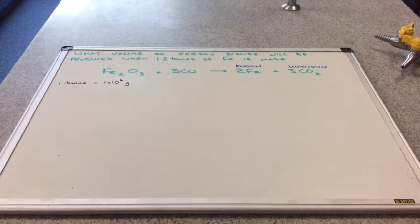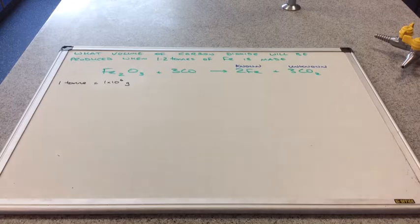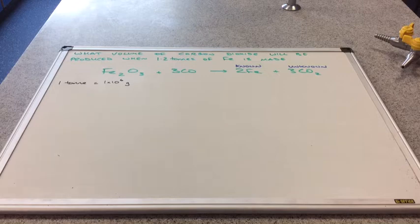So we've identified the known and the unknown. So iron's the known substance. We know that 1.2 tonnes have been made. The unknown substance is that volume of carbon dioxide.